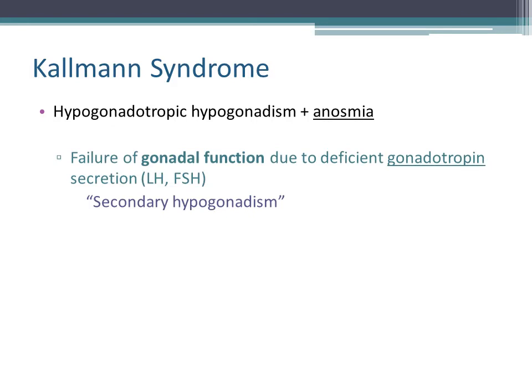The problem with Kallmann syndrome originates from failure of the gonadal function due to deficient gonadotropin secretion — LH, luteinizing hormone, or FSH, follicle-stimulating hormone. We call this secondary hypogonadism. Primary hypogonadism is when the problem is in the gonads themselves, like the testicles or the ovaries. Here, the testicles and ovaries are intact but not receiving the stimulatory signal from the pituitary gland.